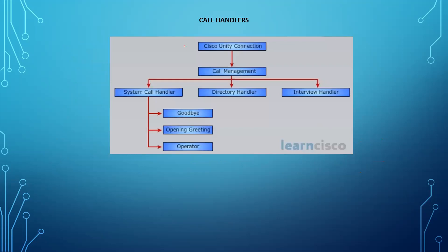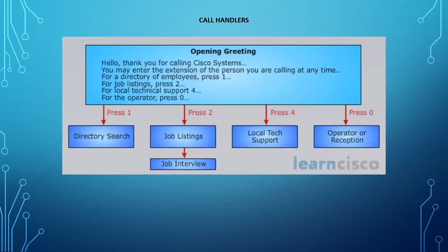I'll show you how to configure the directory, interview, and system call handlers. In Cisco Unity Connection, under Call Management, we have these three options: system call handler, directory call handler, and interview call handler. Under the system call handler, three are created by default — Goodbye, Opening Greeting, and Operator. Today I'm going to configure the Opening Greeting and use it to set up the interview and directory call handlers.